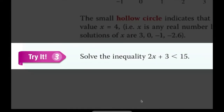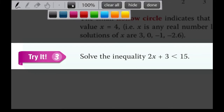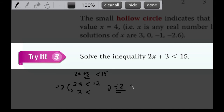Let's look at example 3 - solve the inequality. This is the same as what we do in solving a linear equation: you are supposed to have only x on one side of the inequality. So 2x plus 3 is less than 15. You minus away 3 on both sides, so you have 15 minus 3, which is 12. Then you divide by 2. This is a positive number, so there is no change in sign - your sign remains the same, so x is less than 6.